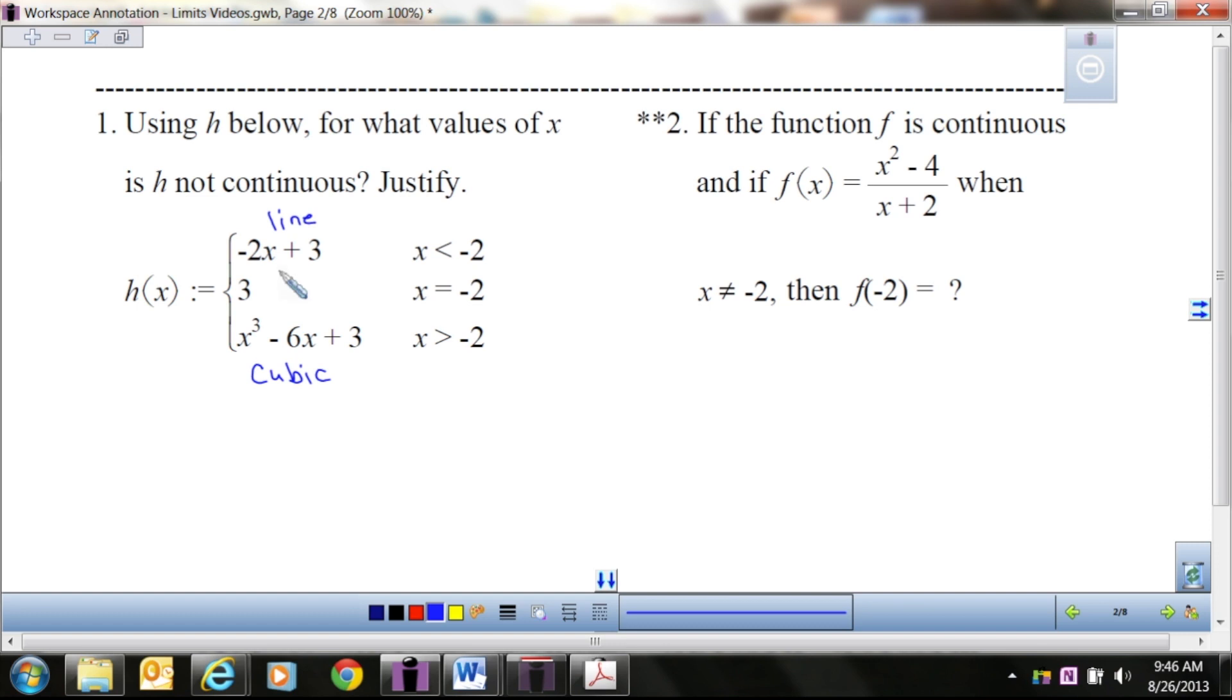So everything less than negative two is going to be a line and it will be nice and continuous. Everything to the right of negative two is a nice smooth cubic. So the only place we're worried about is this is what I call the break point. So the first thing you've got to do is plug negative two into there. If you plug negative two into the line, you get, let's see, four plus three is seven. Negative two times negative two is four, plus three is seven. If you plug negative two into here, you get eight, negative eight, plus twelve, plus three, which is seven.